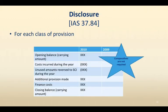Remember there is also a disclosure requirement. For each class of provisions you need to disclose the following. As a side note, comparative amounts are not required — this is the one standard where comparative amounts are not required. Therefore, you show an opening balance, the costs incurred during the year, any unused amounts that need to be reversed, additional provisions made during the year, and the finance cost capitalized, which gives you the closing balance.